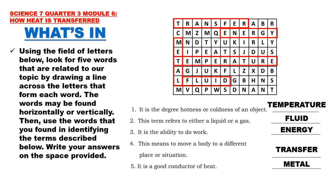Let us answer What's In. The words in the puzzle are Transfer, Energy, Temperature, Fluid, and Metal. Number 1: It is the degree of hotness or coldness of an object. The answer is Temperature. Number 2: This term refers to either a liquid or a gas. Answer: Fluid. Number 3: It is the ability to do work. Answer: Energy. Number 4: This means to move a body to a different place or situation. The answer is Transfer. And number 5: It is a good conductor of heat. The answer is Metal.